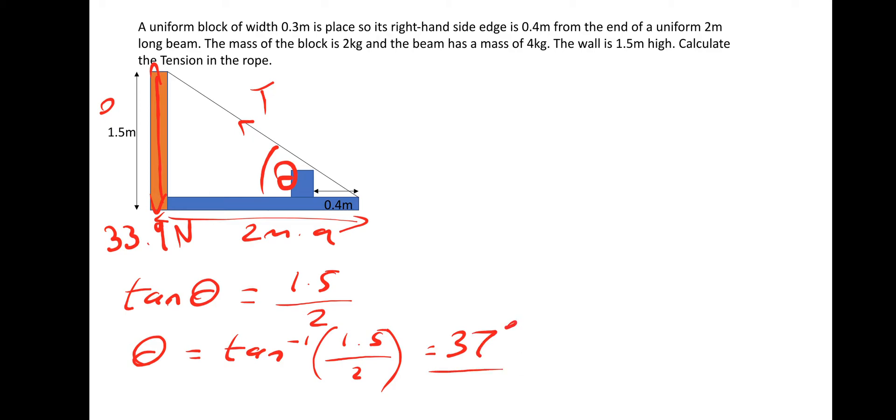Then we can switch to calculating the tension. So essentially we've got the vertical component 33.9 Newtons. We've now got the angle which is 37 degrees. So we can calculate the tension. So we've got the opposite. We want the hypotenuse. So that's sin. So sin 37 is equal to opposite which is 33.9 divide by the hypotenuse which is the tension T.